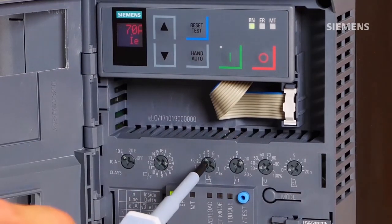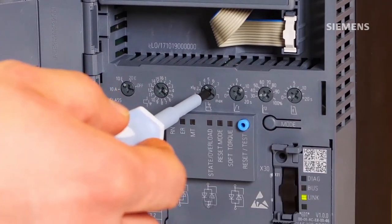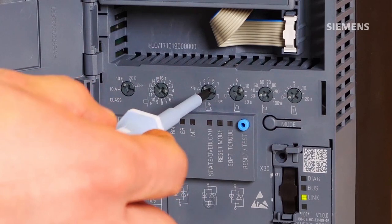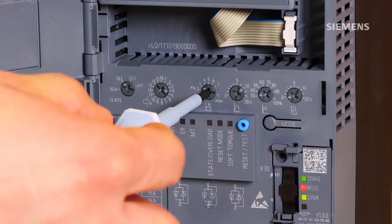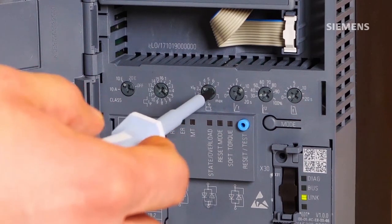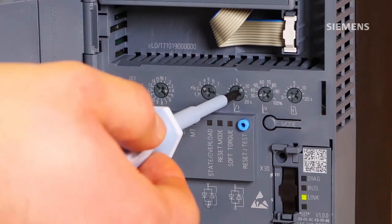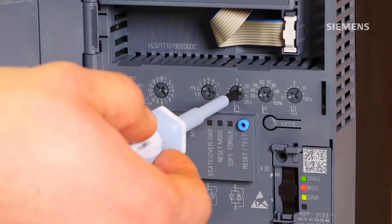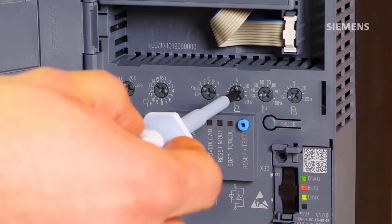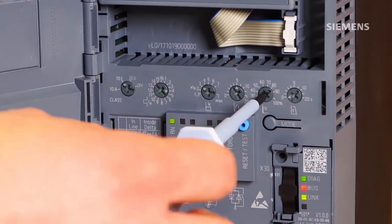With the third rotary knob you set the factor for the starting current limitation. Our pump application will start with a ramp up time of 5 seconds and a starting voltage of 50%. So set this parameter with the fourth and fifth rotary knob.